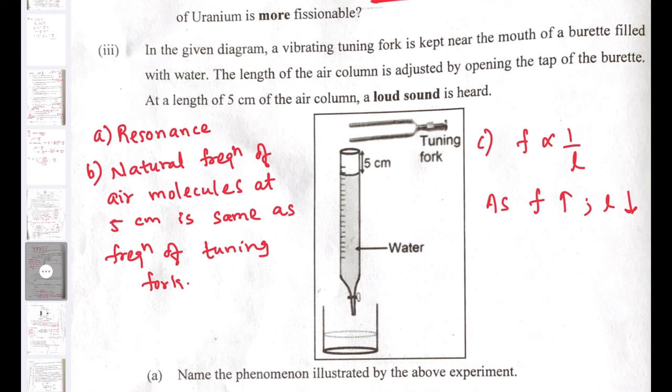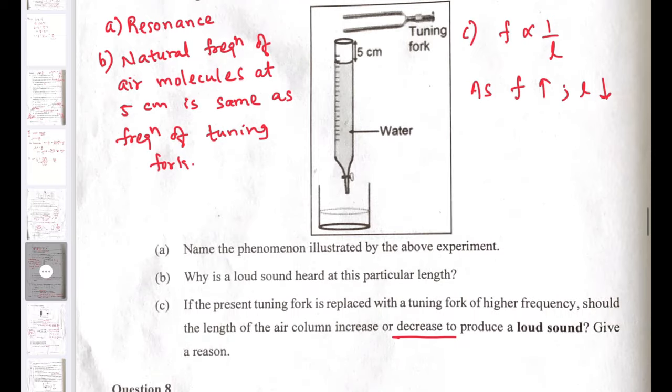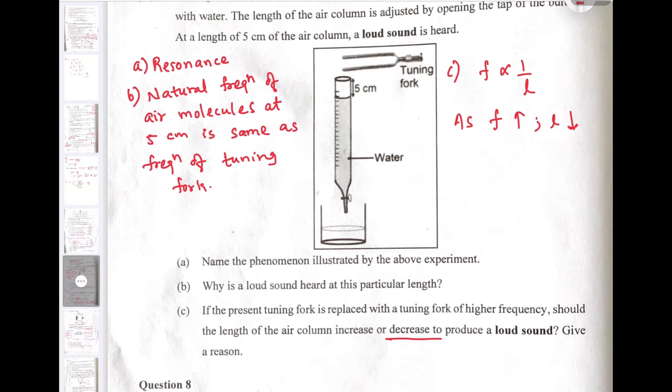In the given diagram, a vibrating tuning fork is kept near the mouth of a burette filled with water. The length of air column is adjusted by opening the tab of the burette. At length 5 cm of the air column, a loud sound is heard. Name the phenomenon: Of course, the phenomenon is resonance. Why is loud sound heard at this particular length? Natural frequency of the air column, when it is same as the frequency of the tuning fork, these air molecules start vibrating with maximum amplitude and hence we hear the loudest sound.